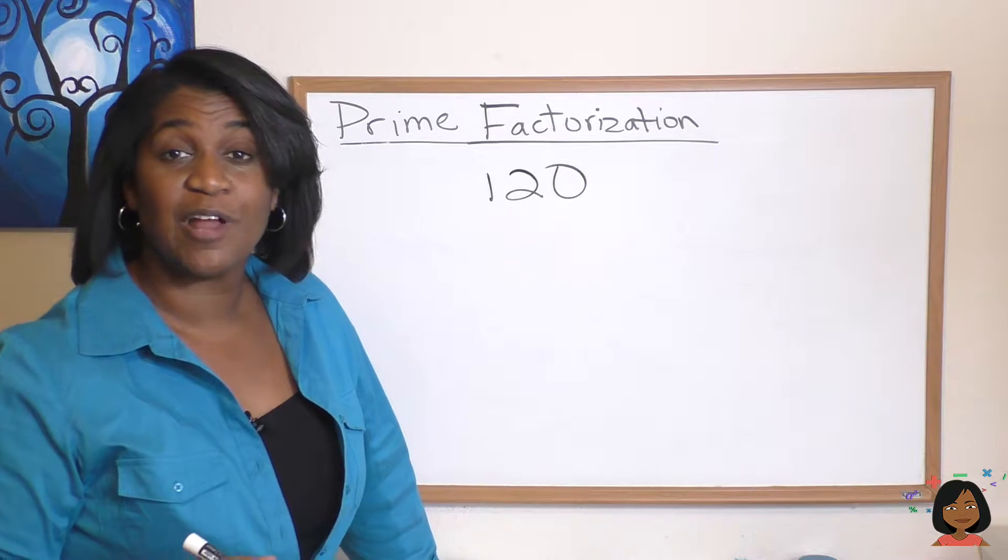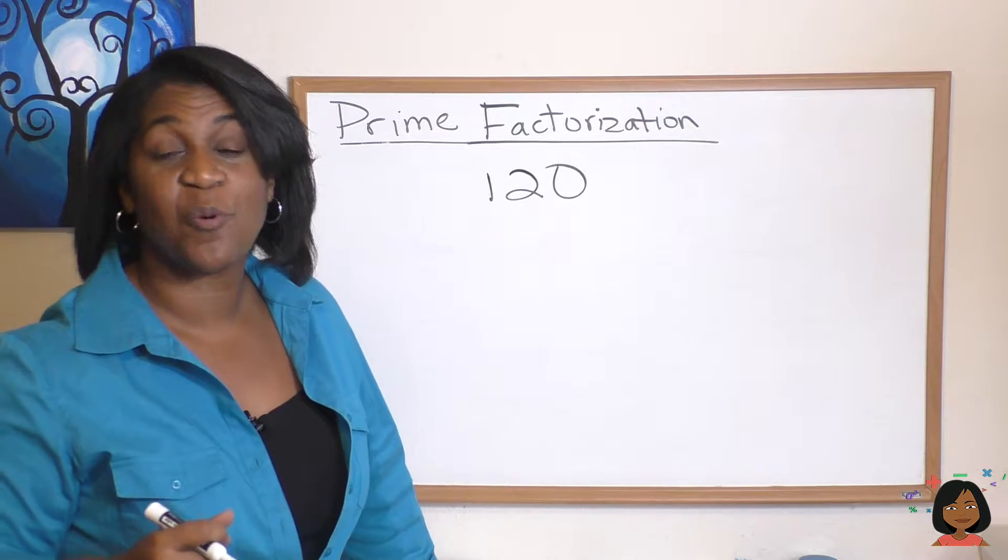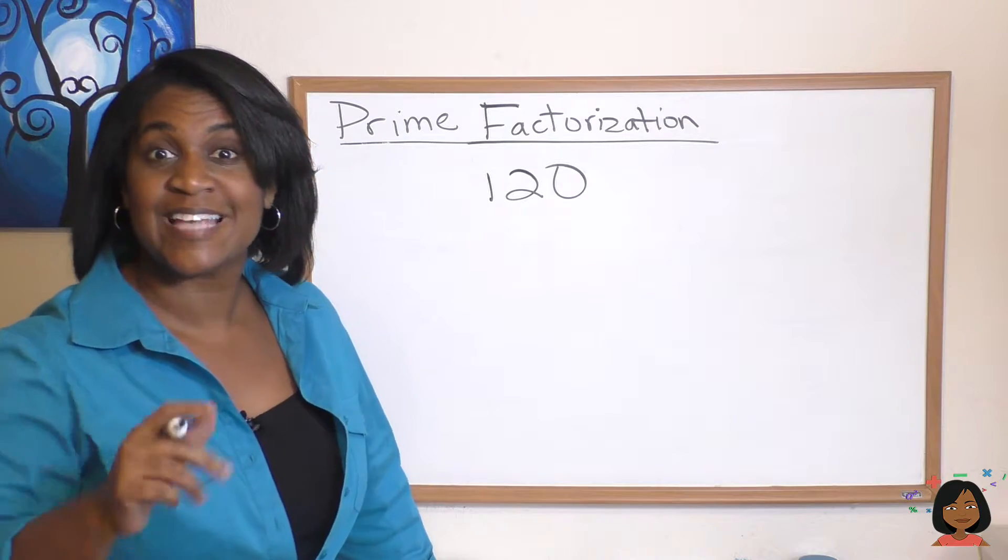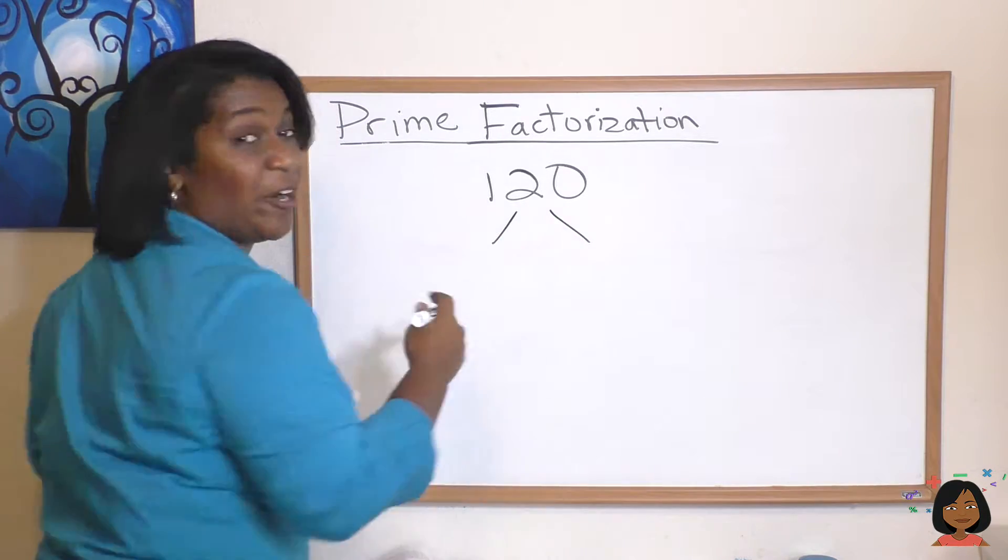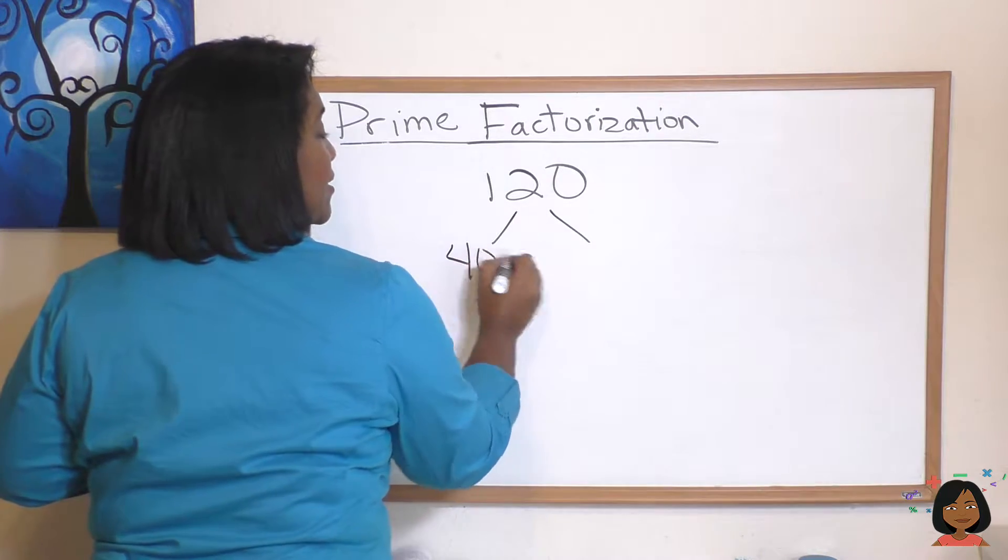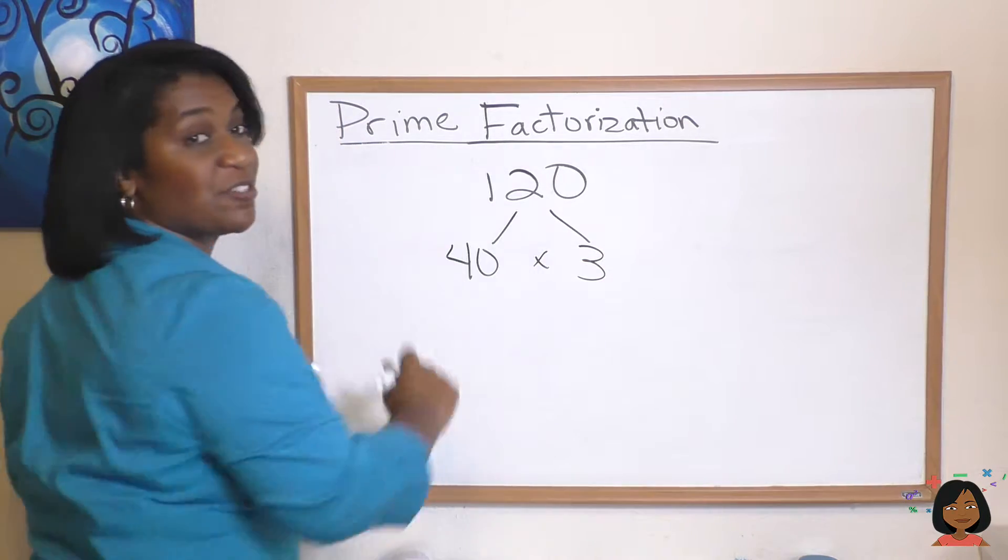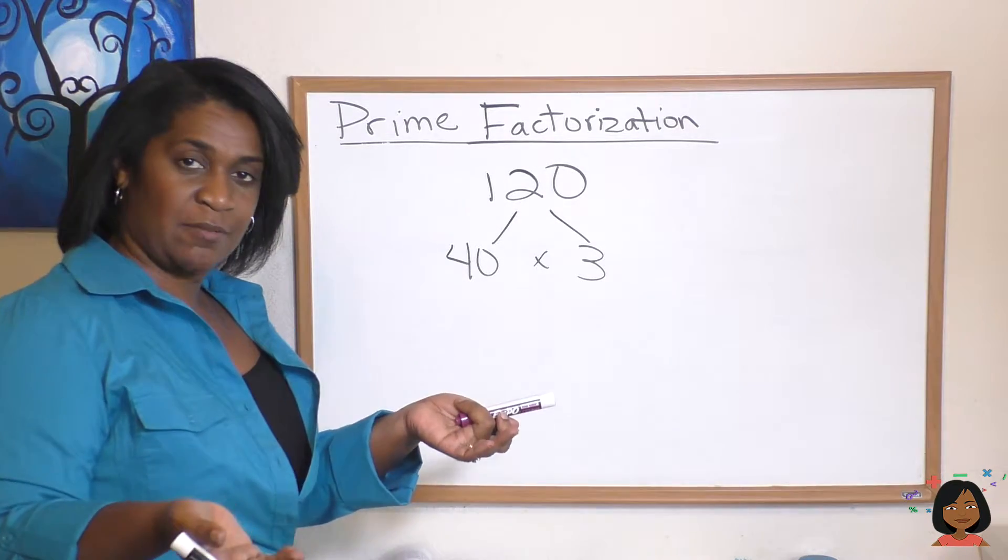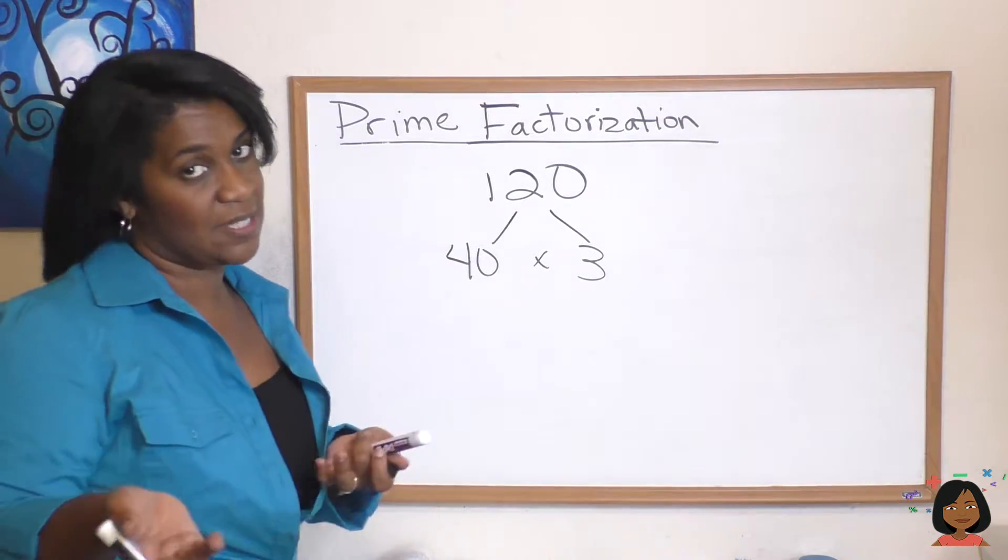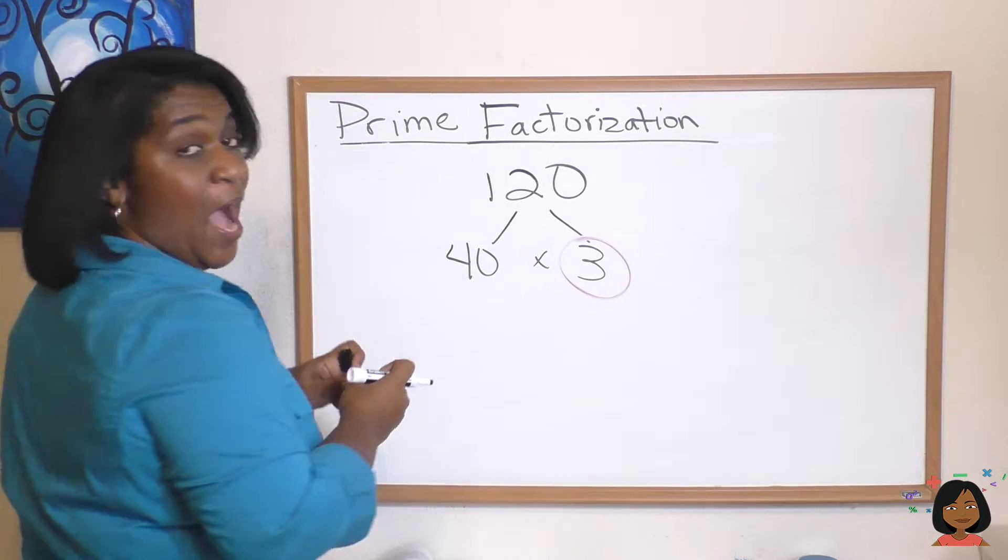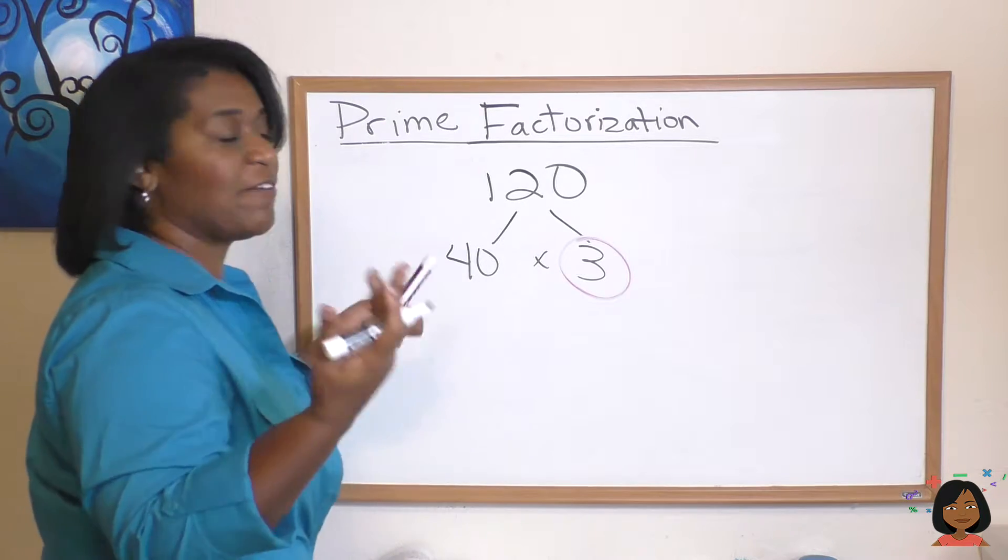Let's try it with another number. My number is 120. I'm going to pick 40 times 3. It doesn't really matter where you start in your factor tree. 40 times 3 gives me 120. Now I look and say are these numbers prime? Well we know 40 is not because it's an even number. But 3 is. So I can circle my 3. Now I'm going to factor again my 40. I'm going to do 20 times 2.